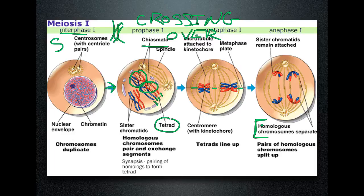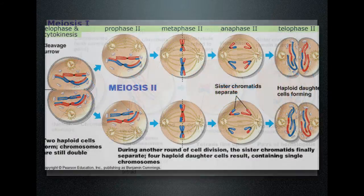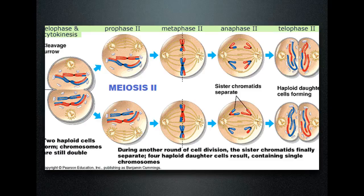If you were a cell in mitosis, you would just pinch in half here and each cell would go on its merry way. But since we are doing meiosis, we need to cut the amount of genetic information in half, and we have not yet done that. So, without duplicating — without going through replication — our two cells that come out of meiosis 1 are going to enter into meiosis 2.